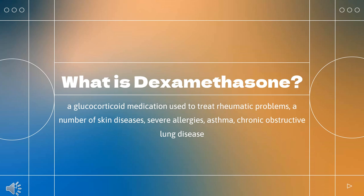Dexamethasone is a glucocorticoid medication used to treat rheumatic problems, a number of skin diseases, severe allergies, asthma, chronic obstructive lung disease, croup, brain swelling, eye pain following eye surgery, superior vena cava syndrome, and along with antibiotics in tuberculosis. Dexamethasone was first synthesized in 1957 by Philip Showalter Hench and was approved for medical use in 1958. It is on the World Health Organization's list of essential medicines.